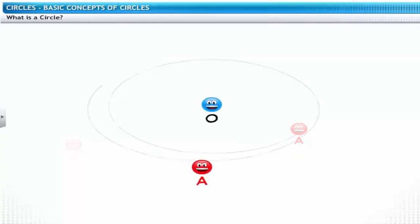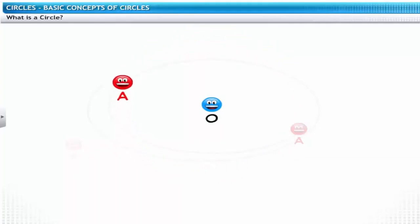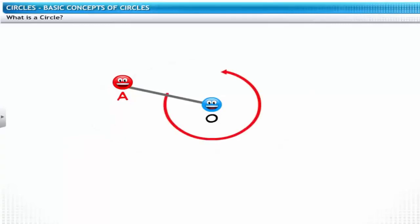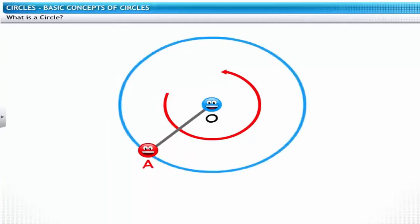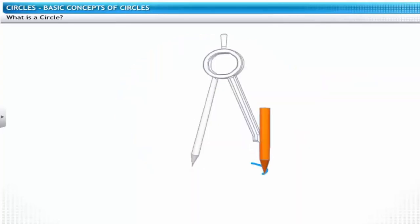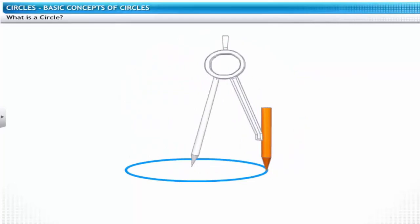Meet Mr. O, a fixed point. We asked Mr. A to move so that his distance from Mr. O always remains the same. For this, we have joined Mr. A and Mr. O with a line. Do you notice any change in Mr. A's movement? The path now traced by Mr. A forms a circle. Mr. A's motion around Mr. O is the same as the motion of the tip of a pencil fixed in a compass.